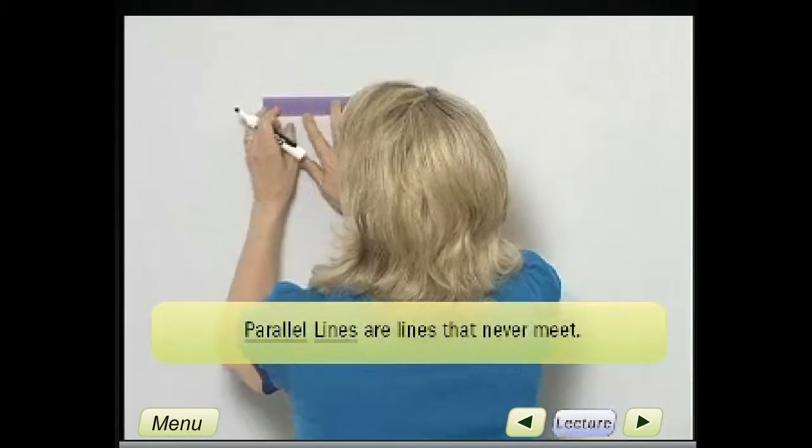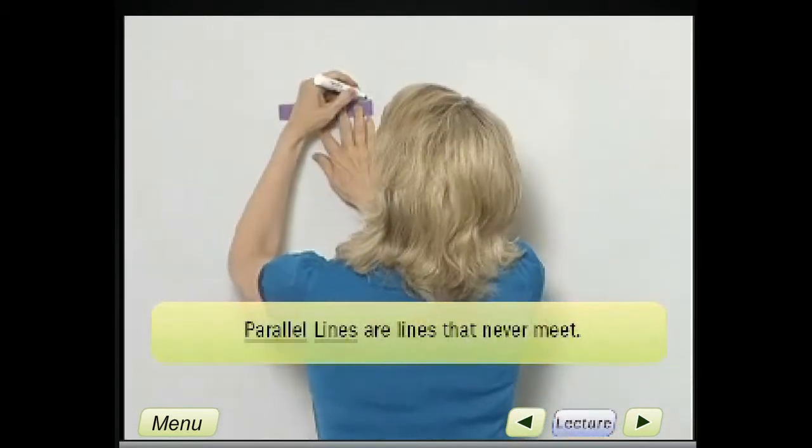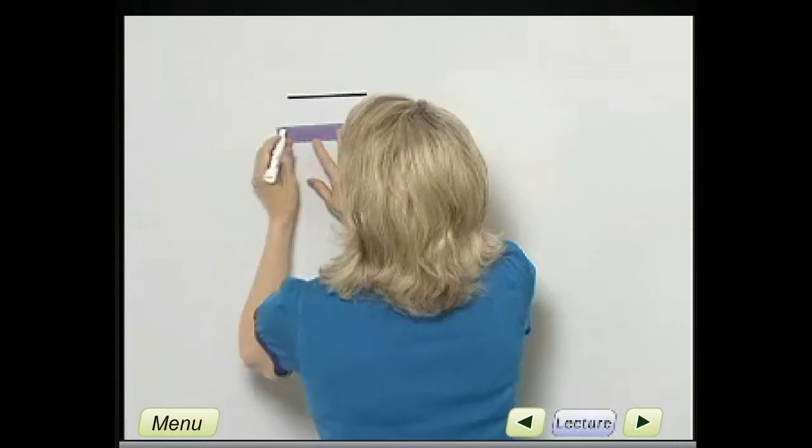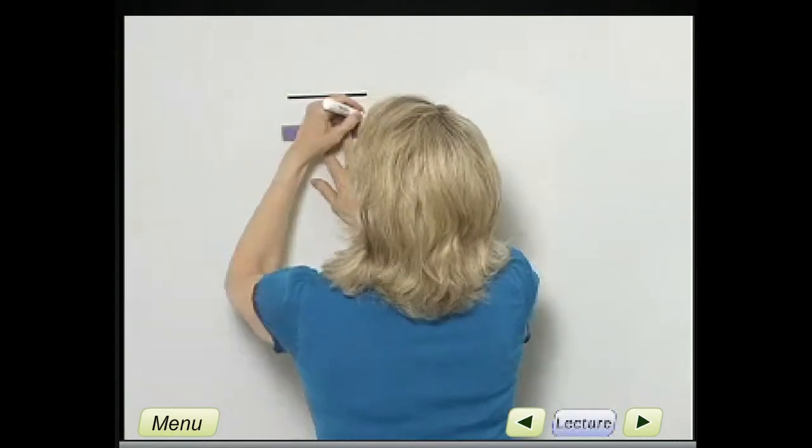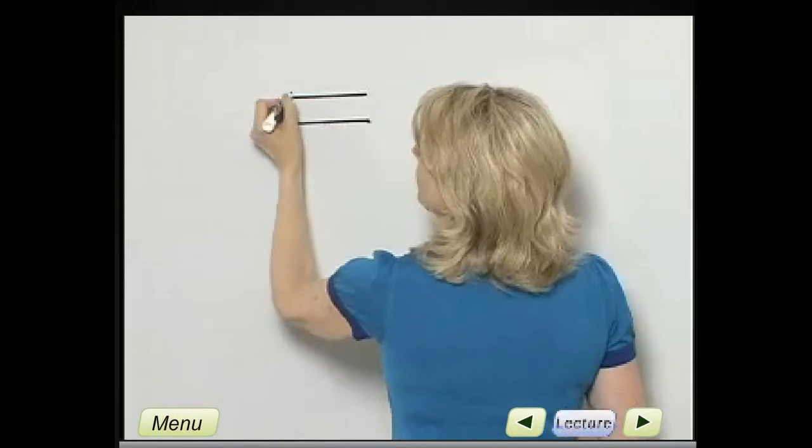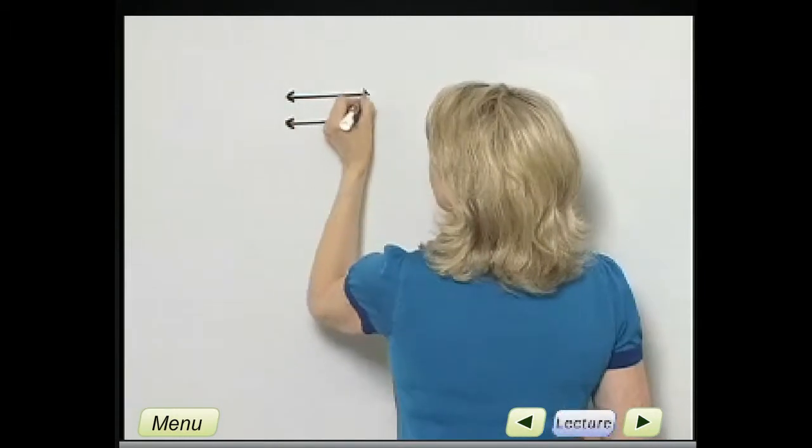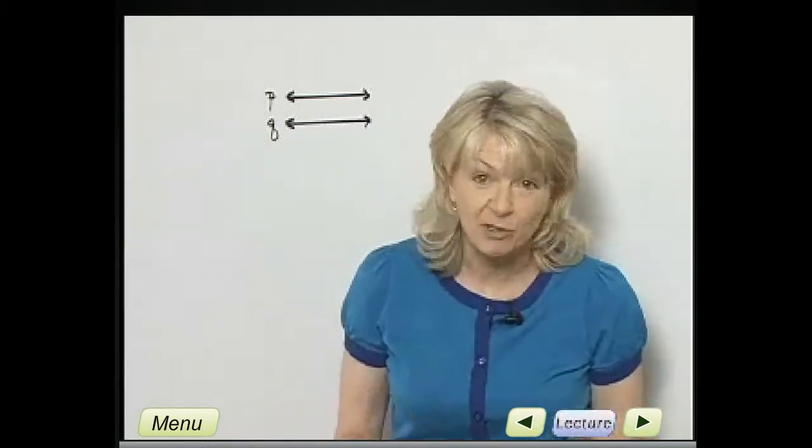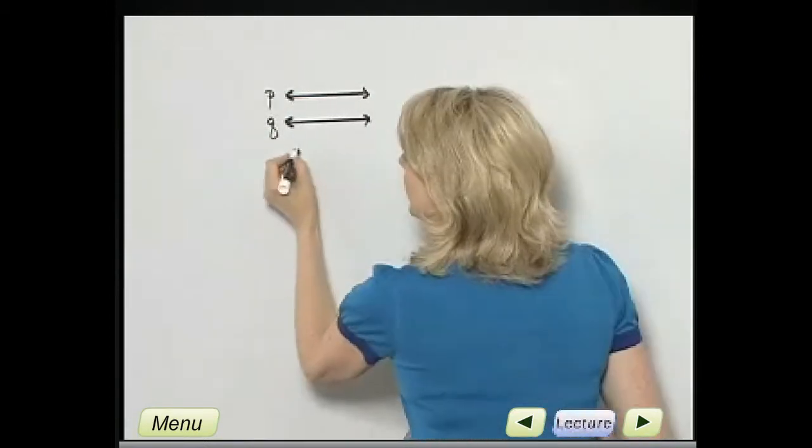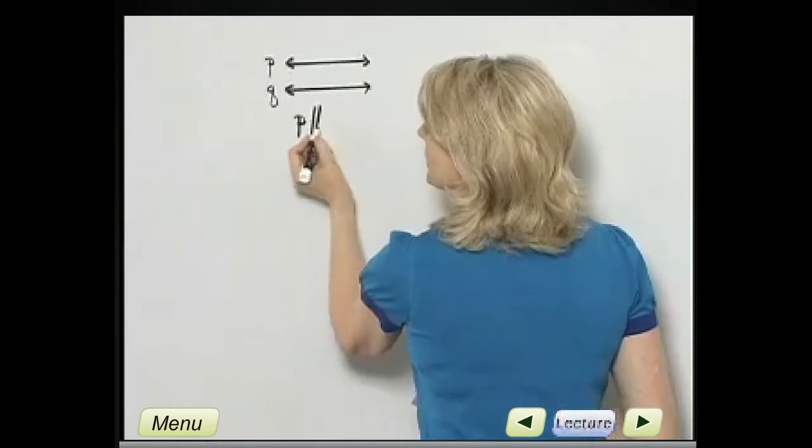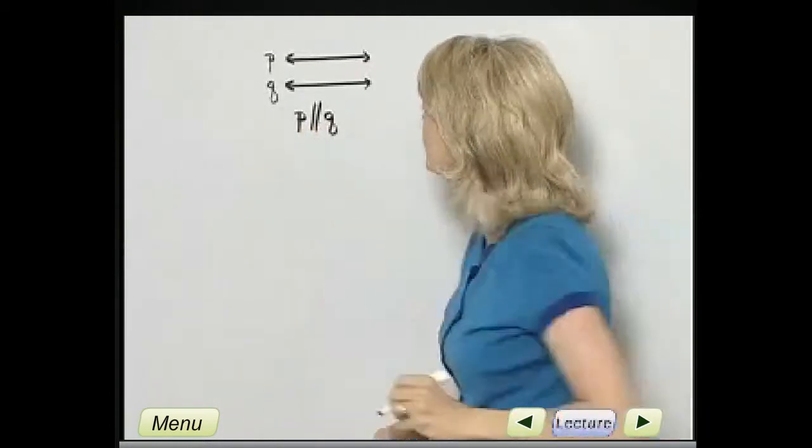So here's an example of two lines that are parallel lines. I'm approximating this. That's basically what parallel lines look like. I can call this line P and line Q. And line P and Q are parallel lines. They never meet. And I can write that using this notation. P is parallel then to Q.